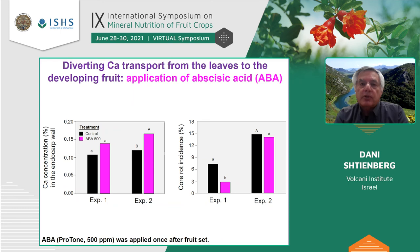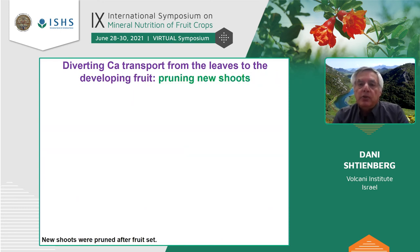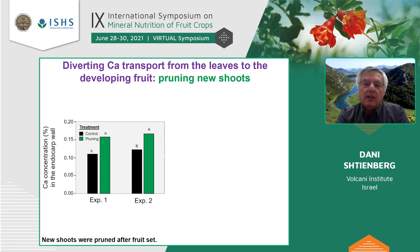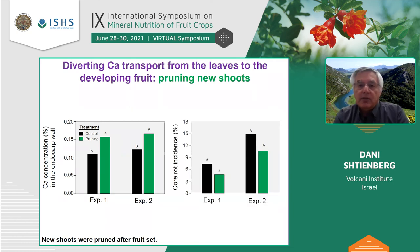The second approach was pruning new shoots soon after fruit set, assuming this would allocate more calcium from the shoots to the developing fruits. We did two experiments. In both, calcium concentration in the endocarp wall was significantly higher than the untreated control, but the increase was not very large. Accordingly, the reduction in core rot incidence was insignificant in both experiments and not high enough to use this technique for managing core rot incidence.